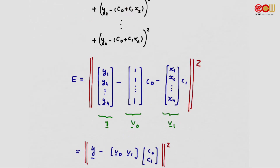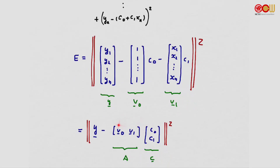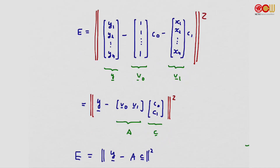We call the vectors v0 and v1, and combine them into a matrix. We see that c0*v0 + c1*v1 can be written as the matrix-vector product [v0 | v1] * [c0; c1]. Calling this matrix A and this vector c, we get E in the compact vector form: ||y - Ac||².